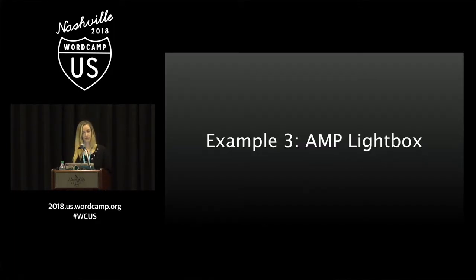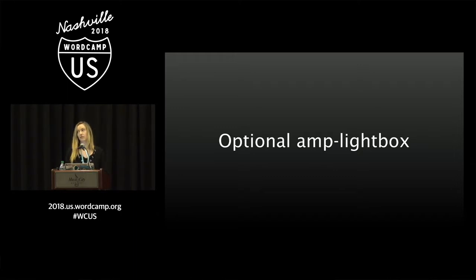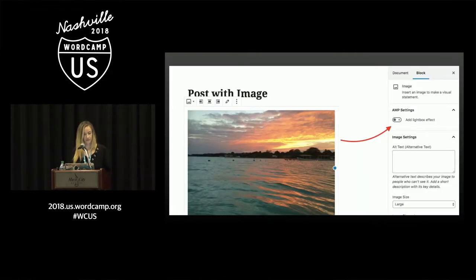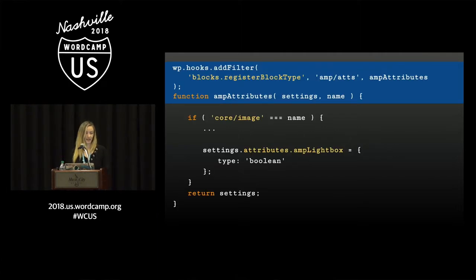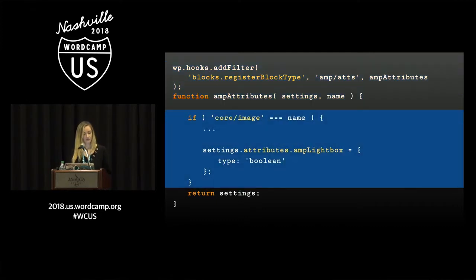The third and last example is about amp-lightbox. What we wanted was to add the option to display an image as a lightbox for all image blocks — the image block, the gallery block, and the gallery shortcode block. I'm going to show this based on the image block. We add just one toggle for optionally showing the lightbox effect. The first thing again is to register settings using blocks.registerBlockType. We check if this is an image block, then add the amp-lightbox attribute as a boolean toggle — type boolean, only true or false — then return the settings.